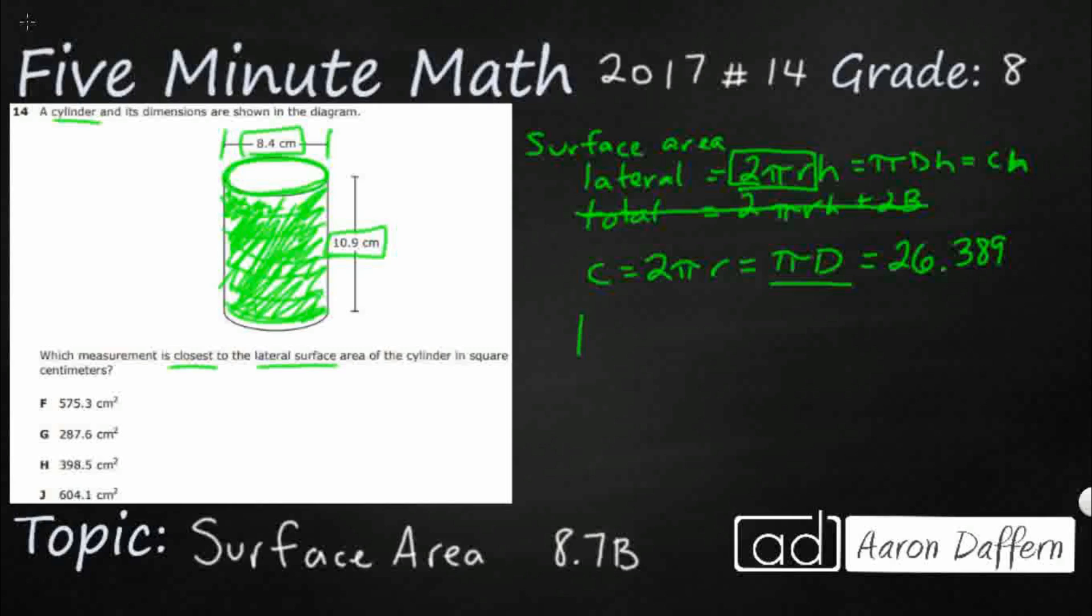So then our lateral surface area, let's bring this back, right? It's going to be your π times diameter times height. So that's 26.389, that's your π times diameter, times your height of 10.9. And then that's all we've got to do. We've got to multiply that by 10.9.